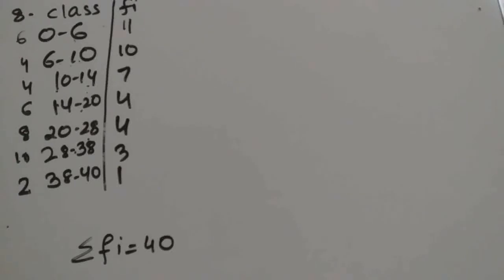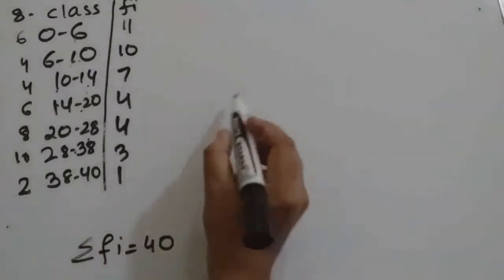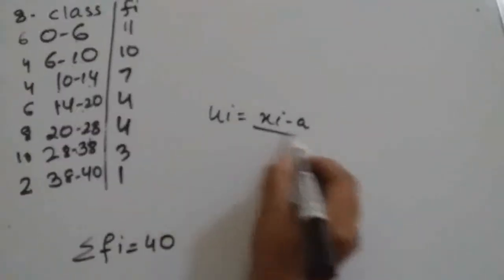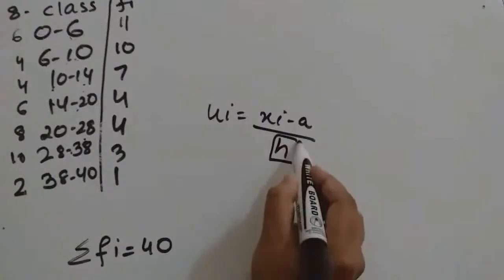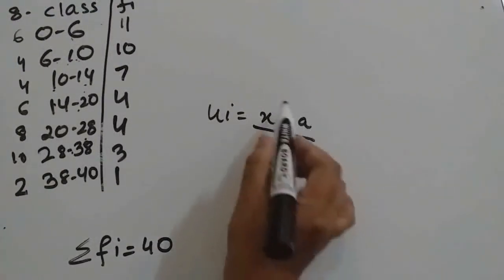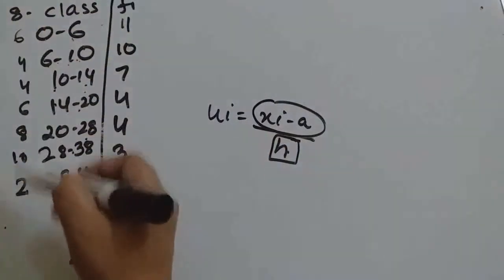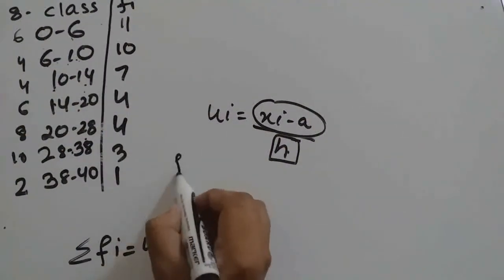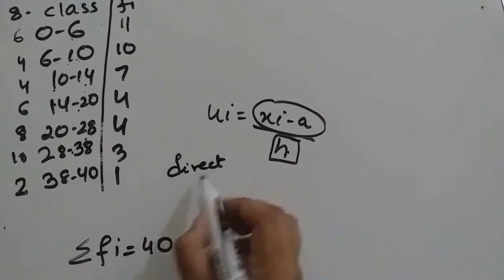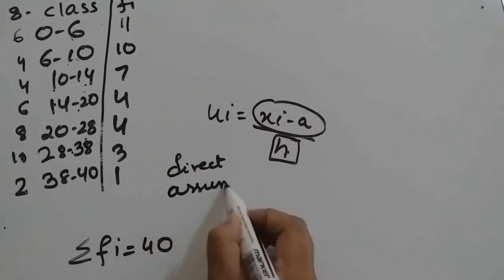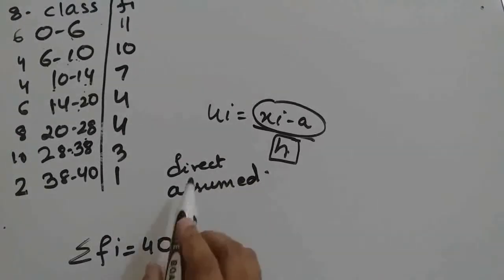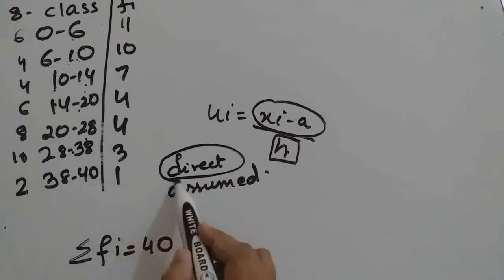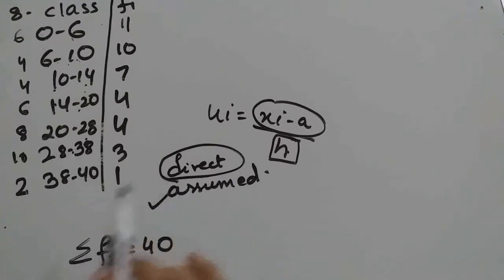For this particular type of question where class size is changing—in previous questions class size was common for all classes—I suggest you not to use step deviation method. Because in step deviation method, xi minus a by h is there, so this h should be constant, but here it is changing. So we can use the other two methods: direct method and assumed mean method. If values are large, we will avoid direct method and use assumed mean method.